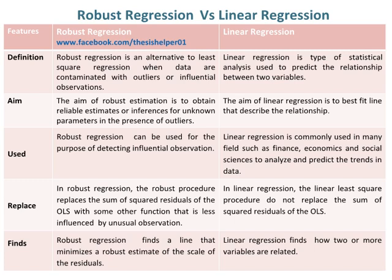Robust regression can be used for the purpose of detecting influential observations. Whereas linear regression is commonly used in many fields such as finance, economics, and social sciences to analyze and predict trends in data.